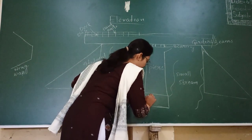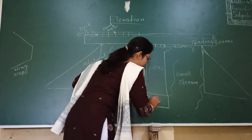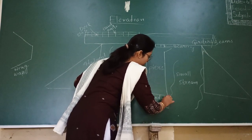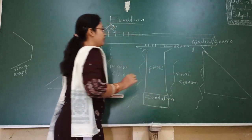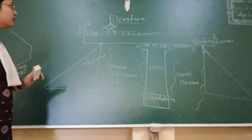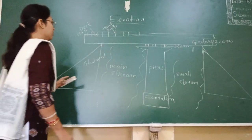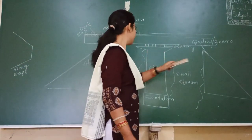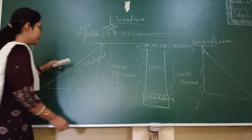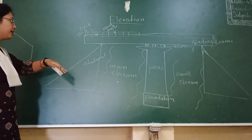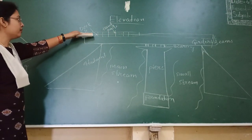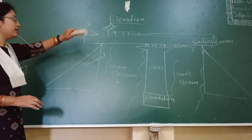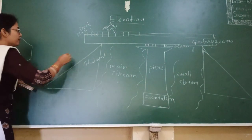This part is the position of the bridge. This is the abutment, the pier, the bearing. And you can see, beside the abutment, this is the girder of the bridge, this is the deck slab of the bridge, and handrails.